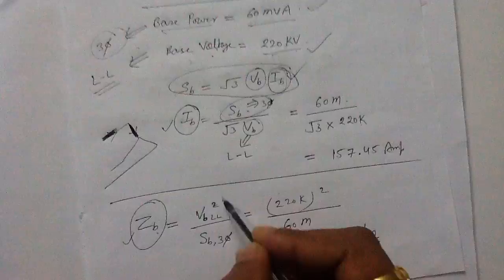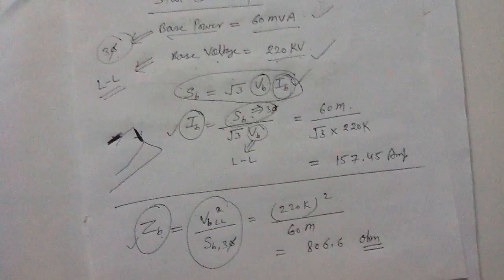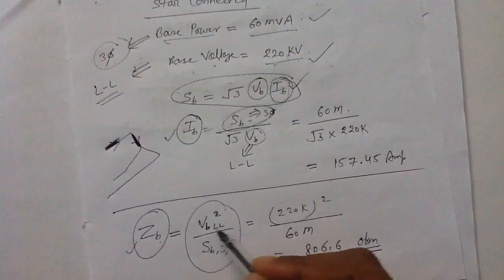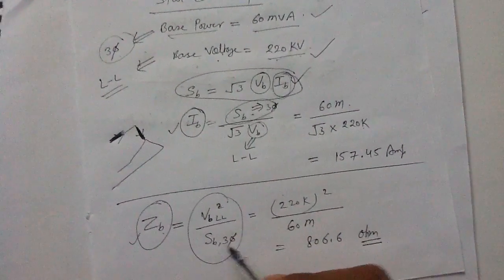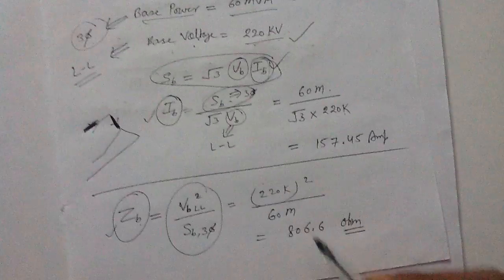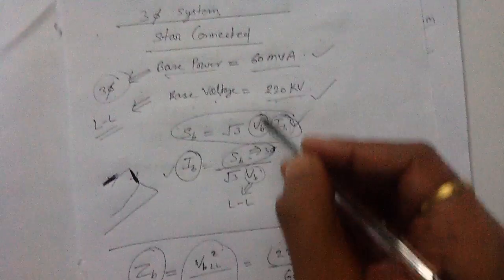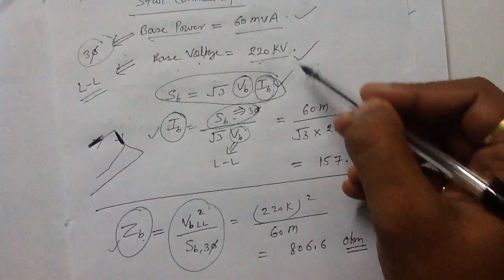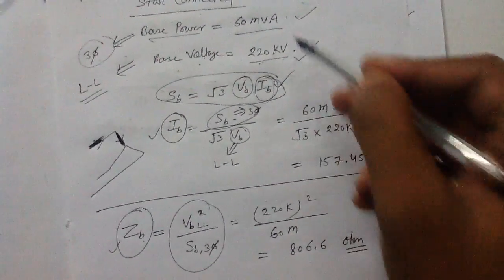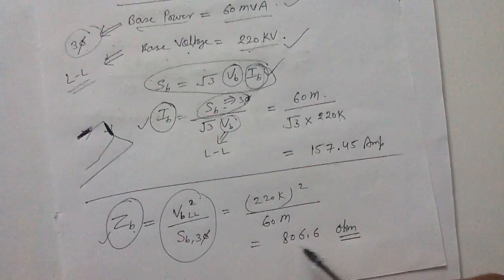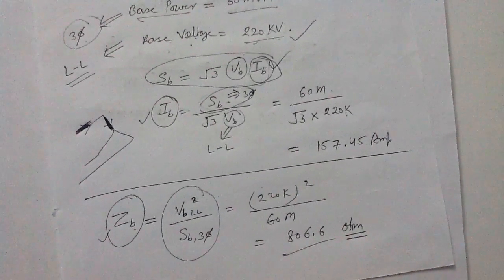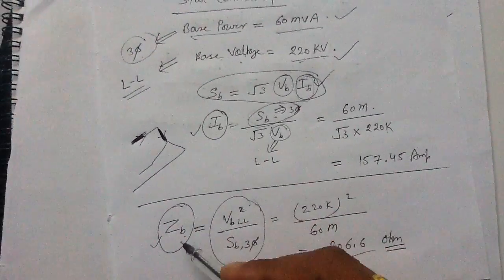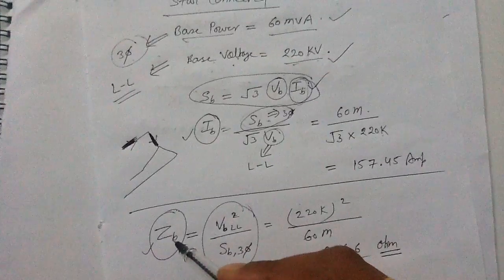To get the value of the base impedance, you can use this formula directly: the line-to-line base voltage squared divided by S_base (three-phase). Putting in the values: 220 kV squared divided by 60 MVA, you will get 806.6 ohm.